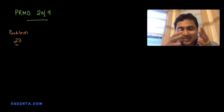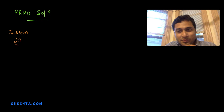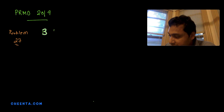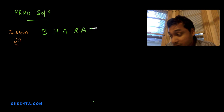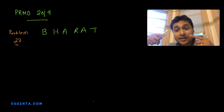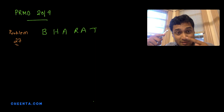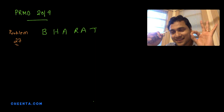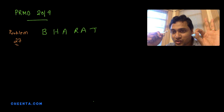Hello everyone. This is a very interesting problem from the Pre-Regional Math Olympiad 2019 — Problem 27. It says: given the word BHARAT, how many ways can we rearrange this word such that none of the letters is in its original position?